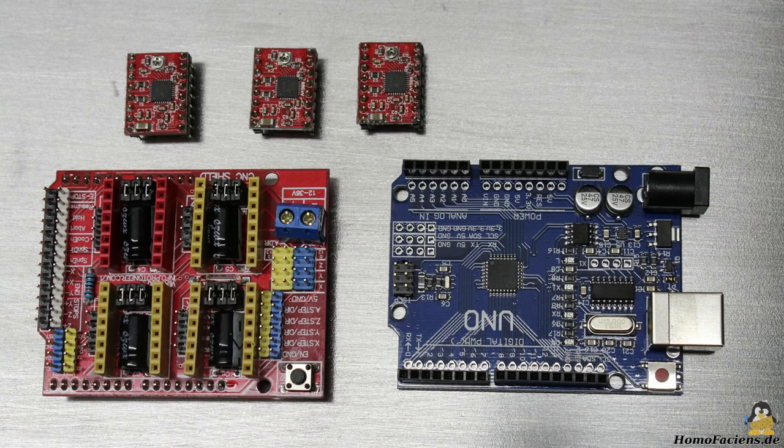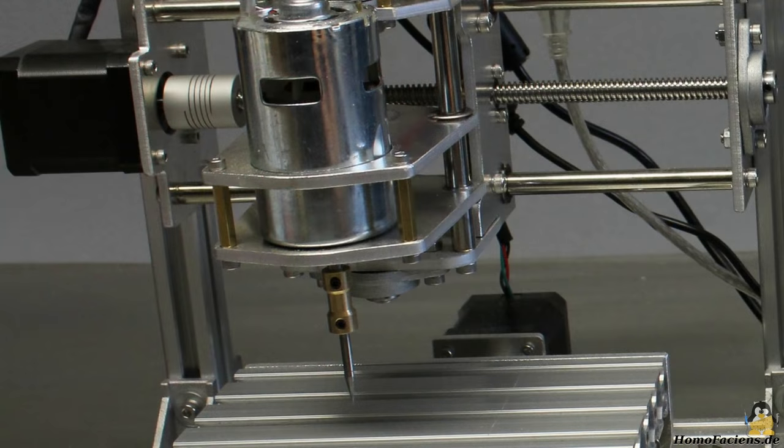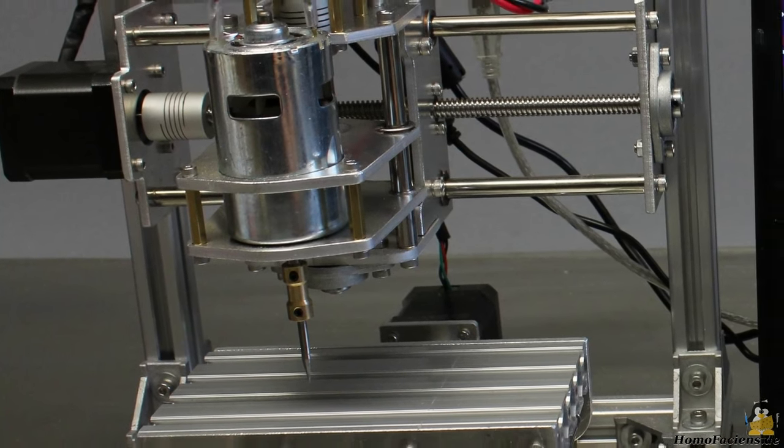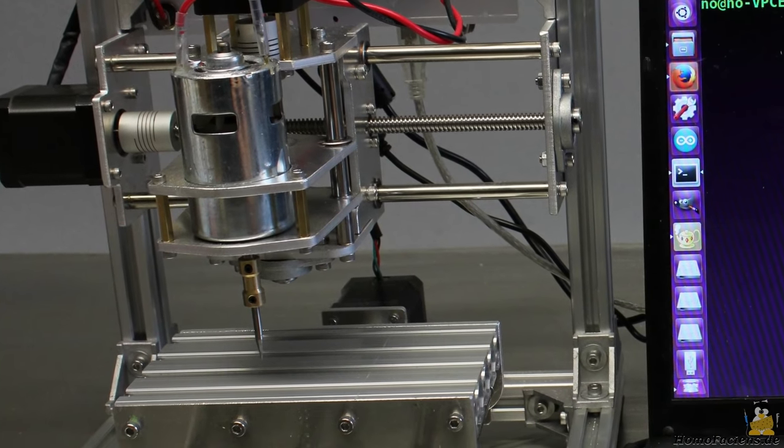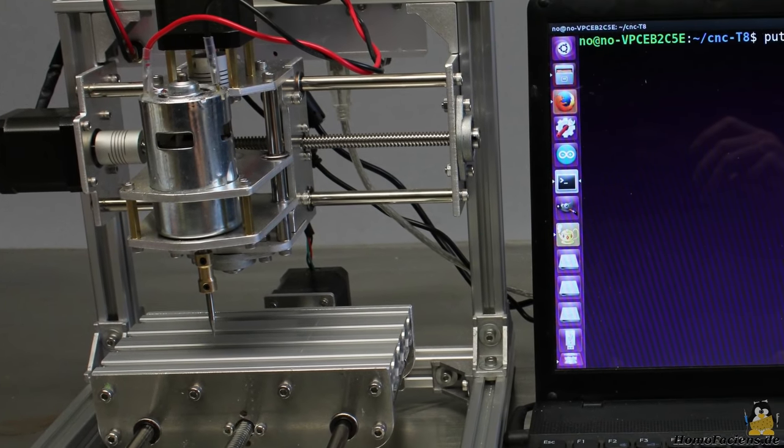An Arduino Uno clone with a CNC shield on top is used to control the motors. GRBL is running on the microcontroller, thus the machine can process G-code.